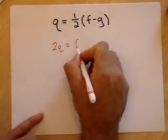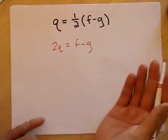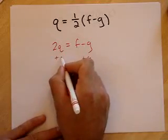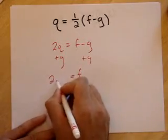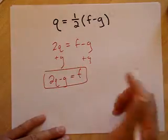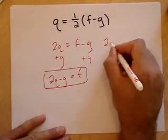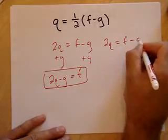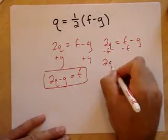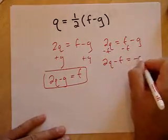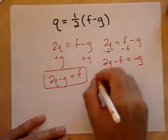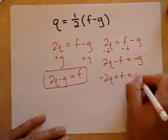I get 2Q equals f minus g. Suppose I wanted to solve for f in terms of g and Q. Well, I add g to both sides, right? And I get f equals 2Q minus g. Suppose I wanted to solve instead for f, I wanted to solve for g. Well, at this step, I subtract f from both sides, right? I get 2Q minus f equals negative g. Then I multiply both sides by negative 1. I take the opposite of both sides. And I get negative 2Q plus f equals g.